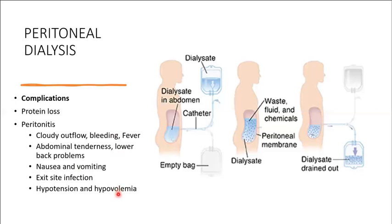Constipation can cause problems with infusion and outflow in peritoneal dialysis — give high-fiber diet and stool softeners. If outflow is inadequate, reposition the client in supine or low Fowler's position, or turn side to side. Monitor vital signs, weight, and intake and output. Clean the catheter insertion site and apply sterile dressing.